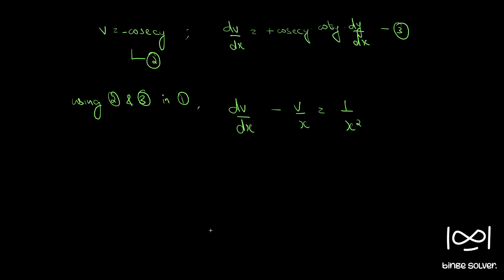So dv/dx and cosec y is minus v, so minus v/x is equal to 1/x². This is a standard form of linear differential equation, the standard form being dv/dx plus pv equal to q where p and q are either constants or functions of x alone. Here p is minus 1/x and q is 1/x².